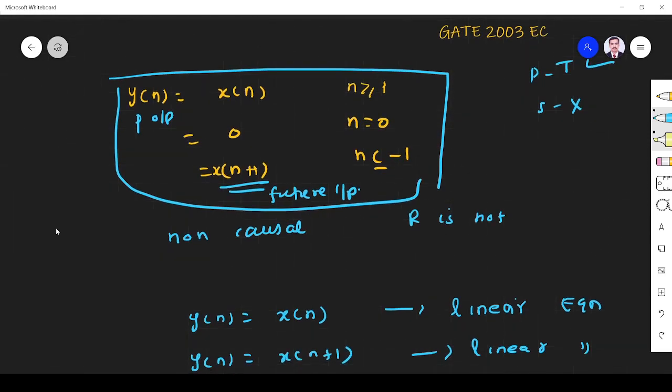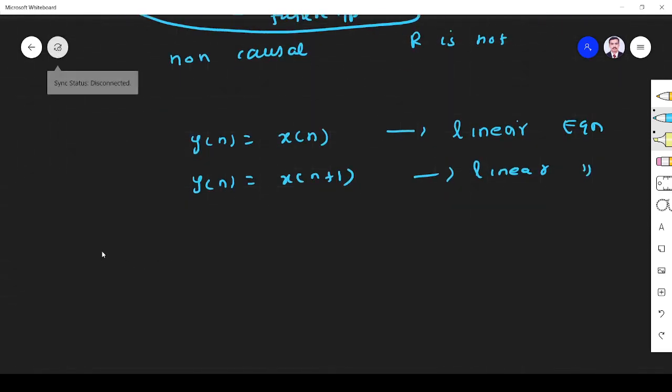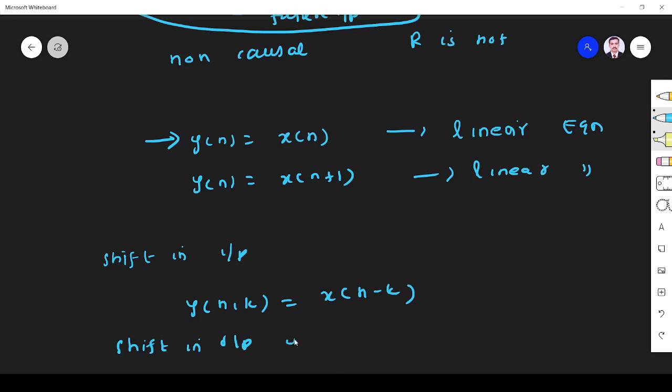Time invariance we will check. Shifting input, I can write y(n-k) equals x(n-k). Here I apply shifting output: y(n-k). So I can write, where we have to shift in the input, y(n-k). This is 1, this is 2.